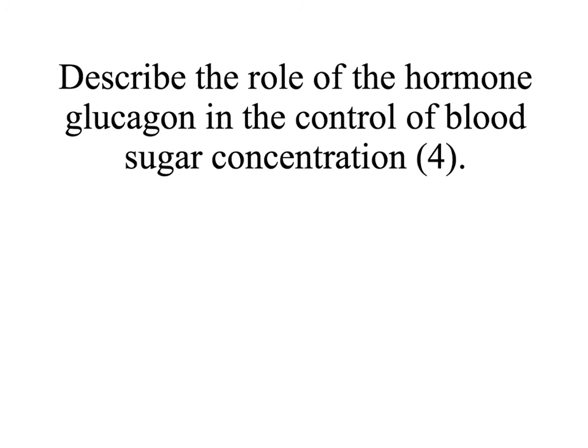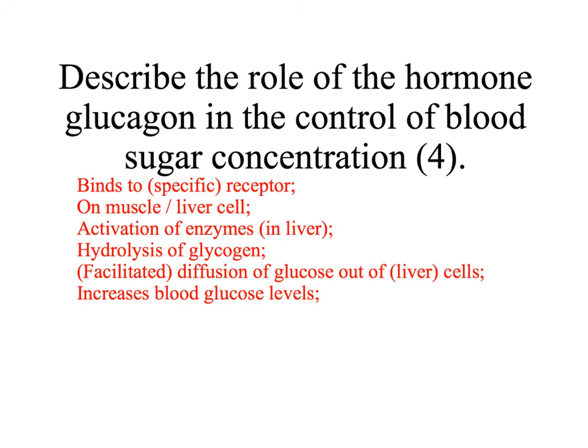Another question asks you to describe the role of the hormone glucagon in the control of blood sugar concentration, for four marks. Note there are no marks for describing how glucagon is released or that it's transported in the blood. Go straight in: glucagon binds to the receptor on the muscle or liver cell, this causes enzymes to be activated, which leads to the hydrolysis of glycogen — glycogenolysis — and then glucose can diffuse out of the liver cells, leading to an increase in blood glucose levels.